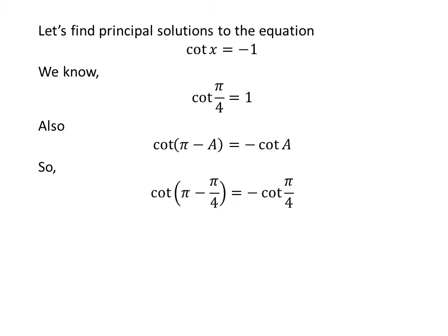Applying this identity, cotangent of pi minus pi upon 4 is equal to minus cotangent of pi upon 4. Since pi minus pi upon 4 equals 3 times pi upon 4, and plugging in the value of cotangent of pi upon 4 gives us cotangent of 3 times pi upon 4 is equal to minus 1.